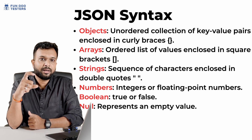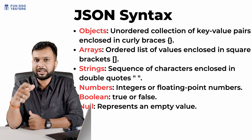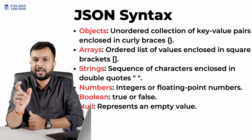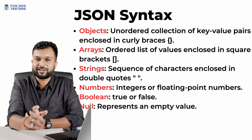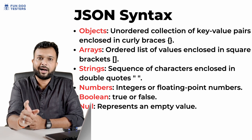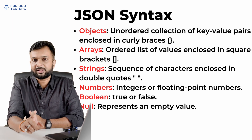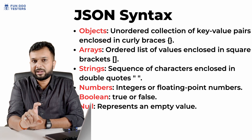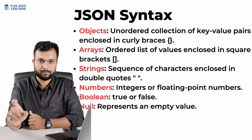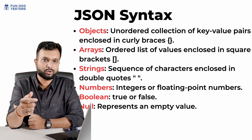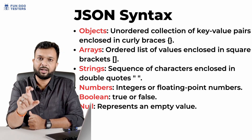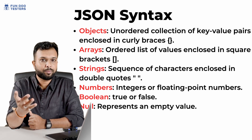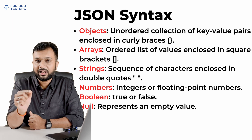Now let's understand the structure of JSON. A JSON file can start and end in two ways: as a JSON object, which starts and ends with curly braces, or as a JSON array, which starts and ends with square brackets. If the data is inside curly braces, it is a JSON object. JSON data is represented in key-value pairs.